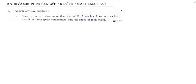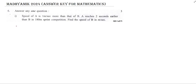Welcome dear students. In this session I will be solving question number six from your Mathemic 2024. The first question is: the speed of A is one meter per second more than that of B. A reaches two seconds earlier than B in a 180 meter sprint competition. Find the speed of B in meter per second.